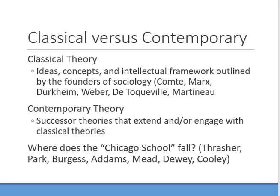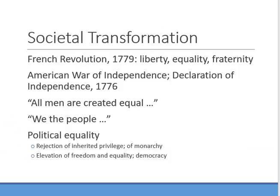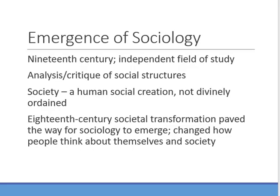Where does the Chicago school fall? That is the school of observation. And symbolic interactionism — this is tough to gauge, and one could make a case either way.